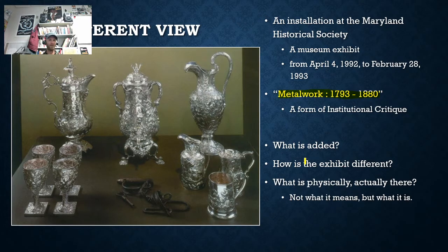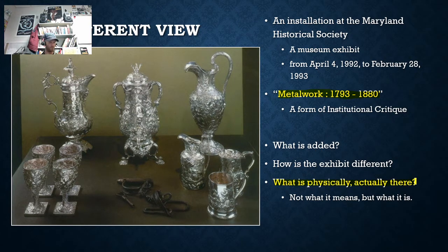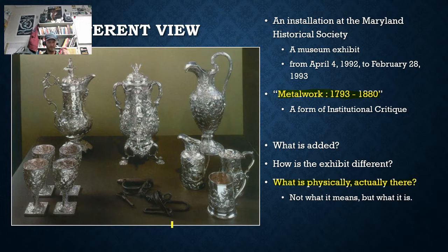Now, if we're looking at these silver items and these manacles — you could refer to them as manacles, chains, or handcuffs — that have been added to the exhibit, the question is: now what do we see? You're not yet interpreting — you're not saying what it means yet — but now, physically, literally, what do you see?